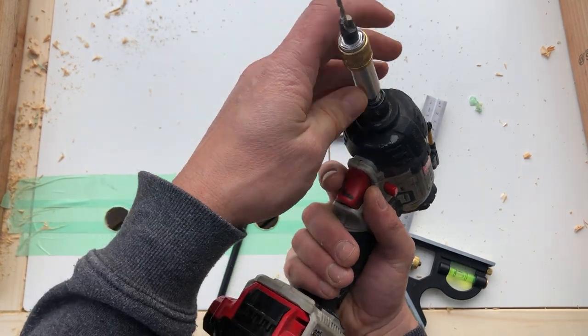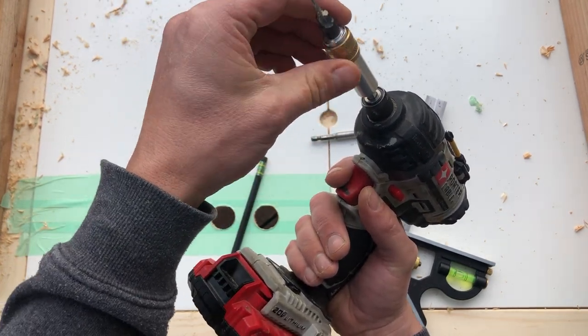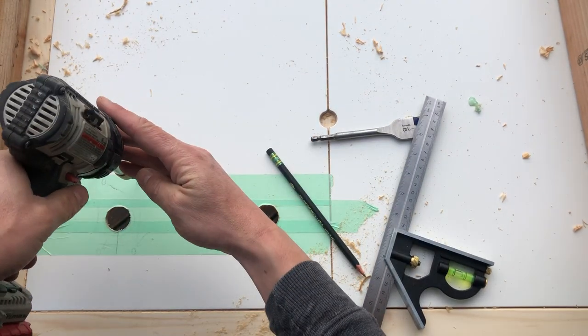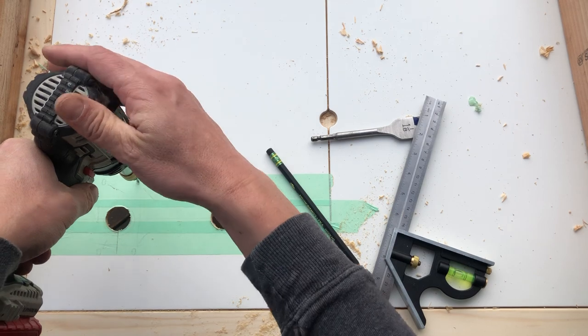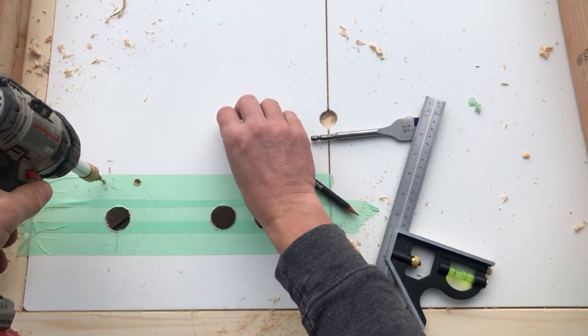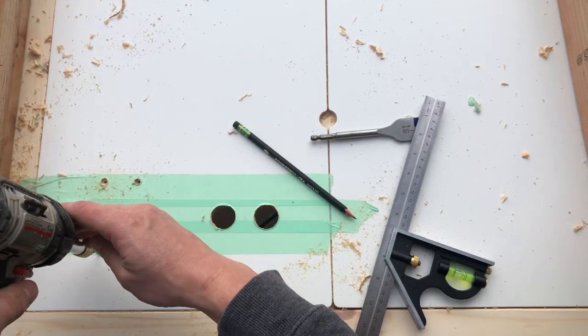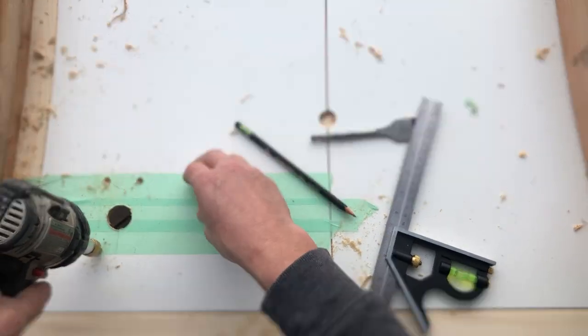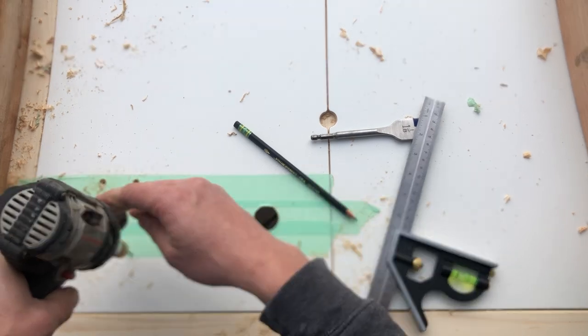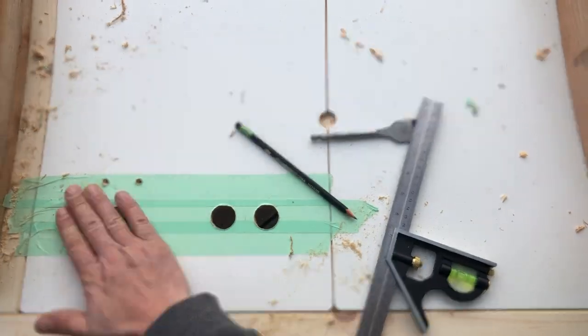It's going to pre-drill a hole. It's also going to create a cavity for the head of your screw to hide, so you get a flush table. Go ahead and drill four holes here.